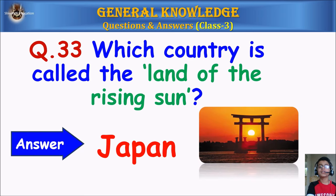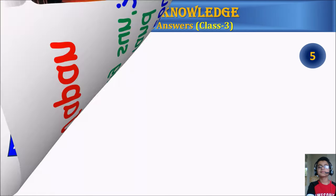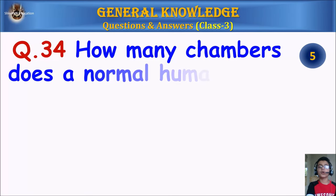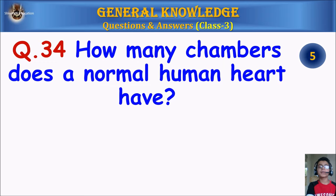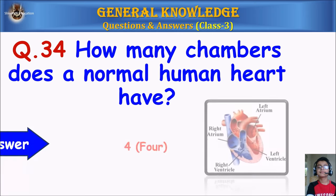Question 33: Which country is called the land of the rising Sun? Your time starts. Answer: Japan. Question 34: How many chambers does a normal human heart have? Your time starts. Answer: Four.